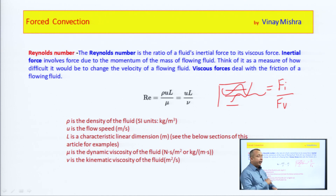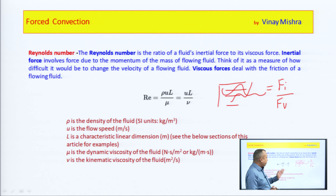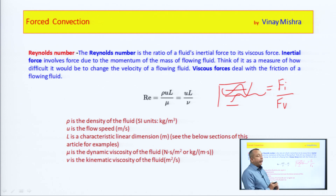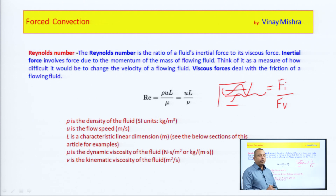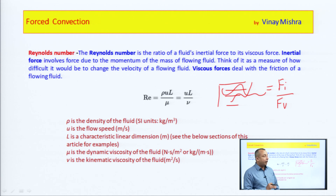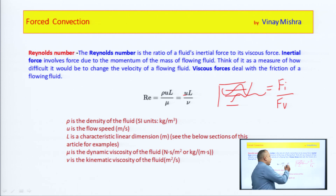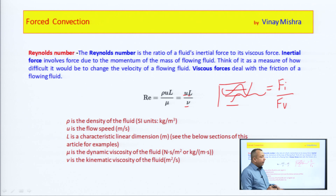If we want to write this in terms of kinematic viscosity, we know that kinematic viscosity equals dynamic viscosity divided by density (rho). So if the value is in terms of dynamic viscosity, it is rho times u times L divided by mu. In terms of kinematic viscosity nu, it becomes u times L divided by nu, where u is the velocity, L is the characteristic length, and nu is the kinematic viscosity.